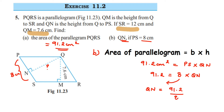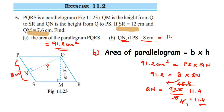Dividing 91.2 by 8: you can cancel using the 4-times table or remove the decimal — either method works. Working through the division: 91.2 ÷ 8 = 11.4. So QN = 11.4 centimeters. That is the height QN.